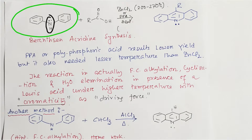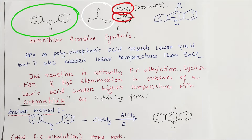We know that amine or aniline derivatives are ortho-para orienting and activating. This carboxylic acid is not that much electrophilic, but we need aromatic electrophilic substitution at a selective ortho position. That is why a Lewis acid or polyphosphoric acid is needed, which can generate an electrophile from the carboxylic acid by removal of the OH⁻.